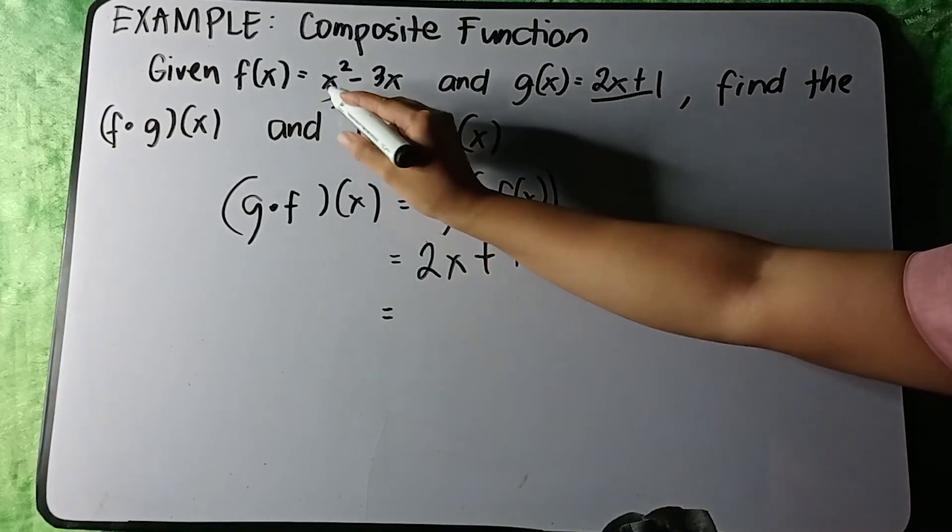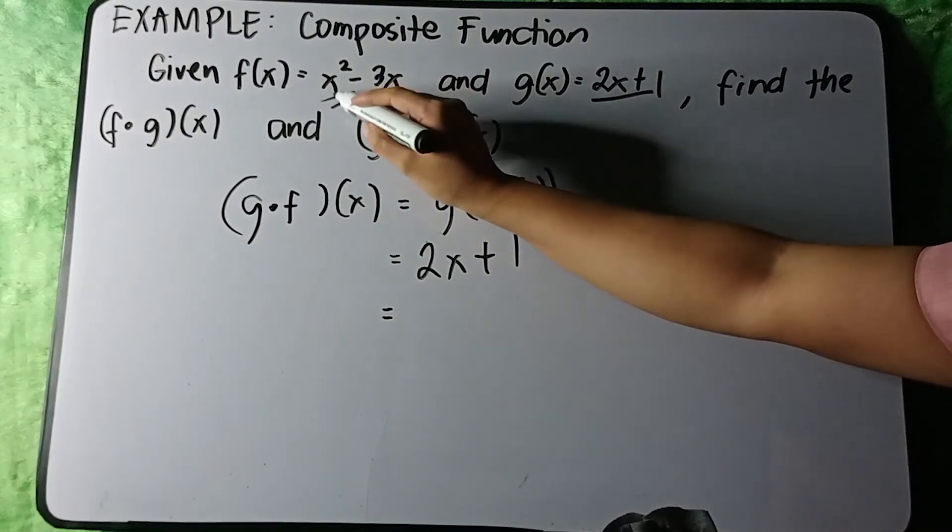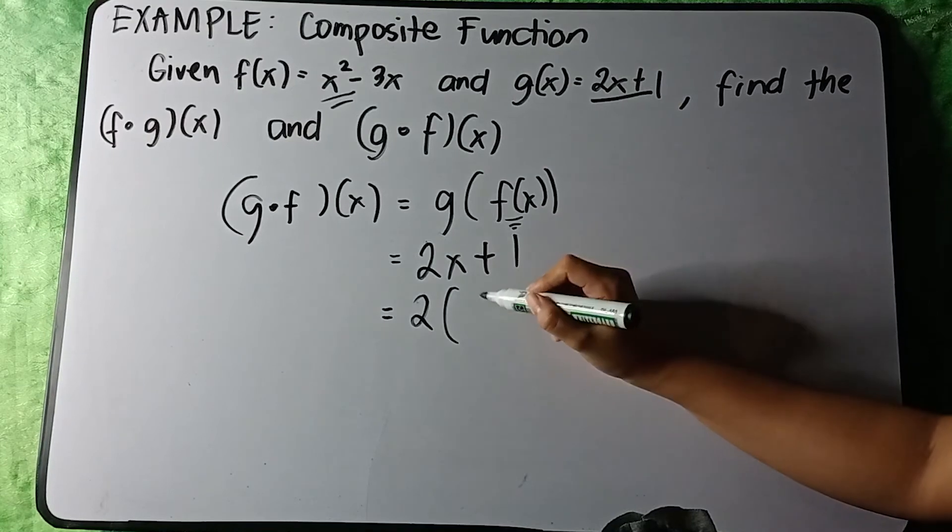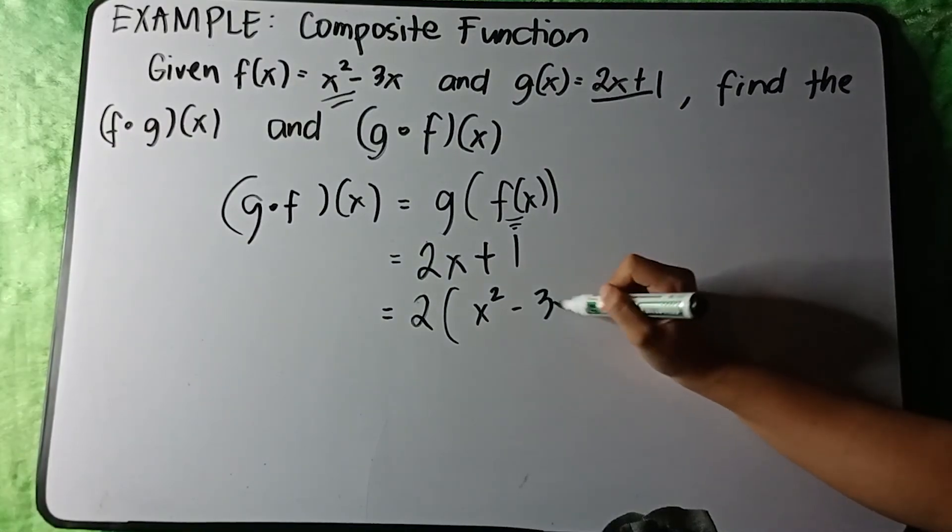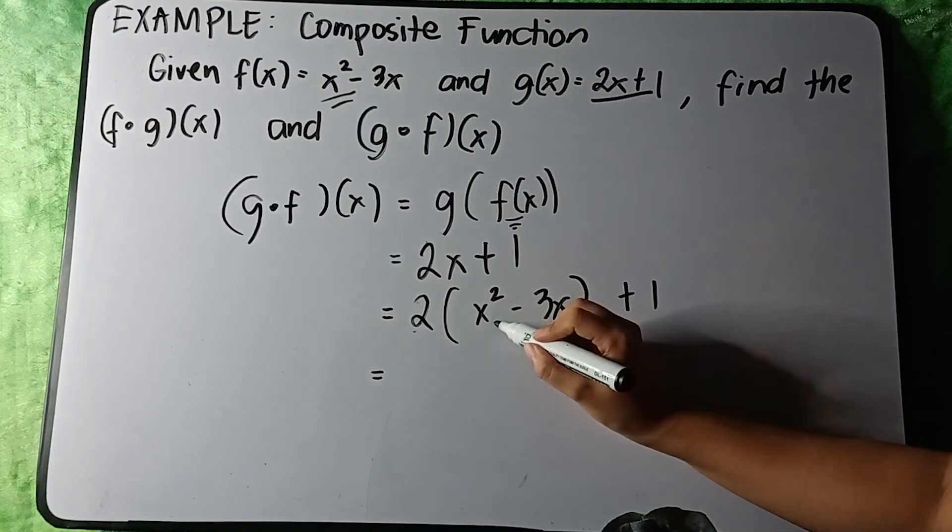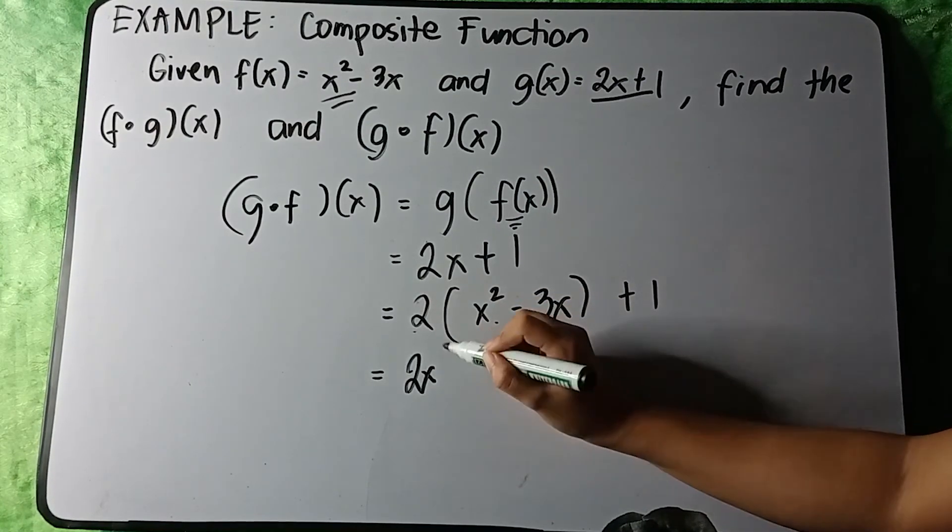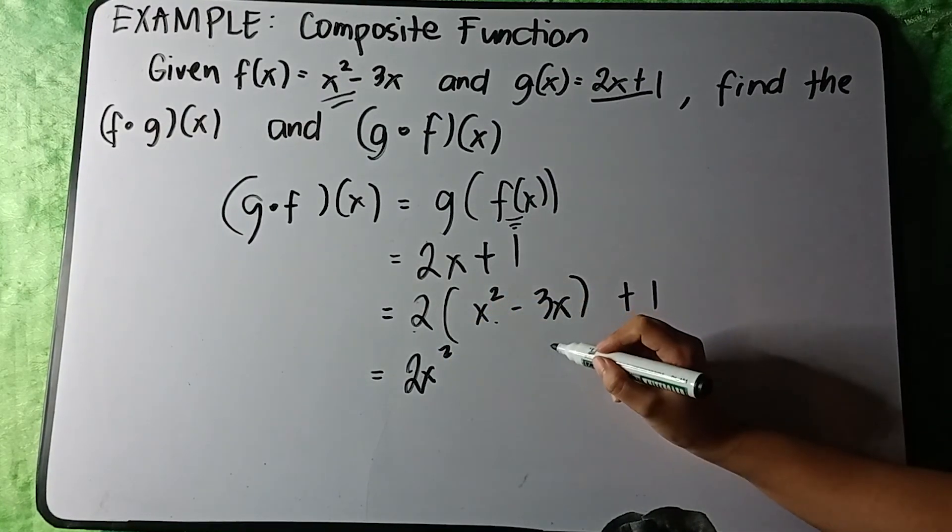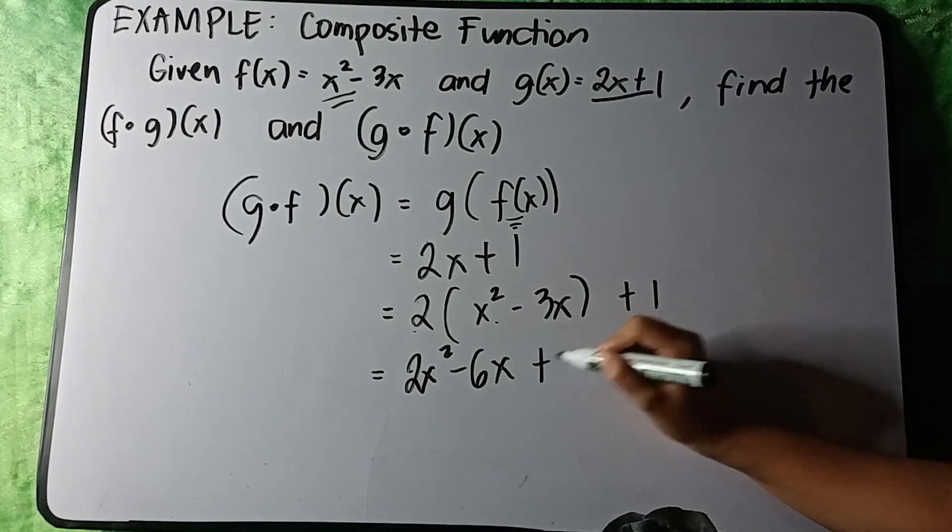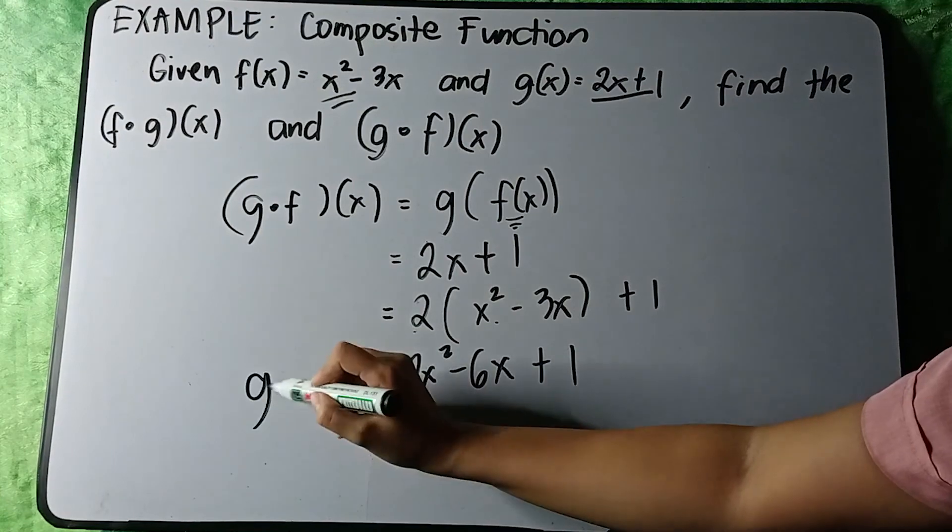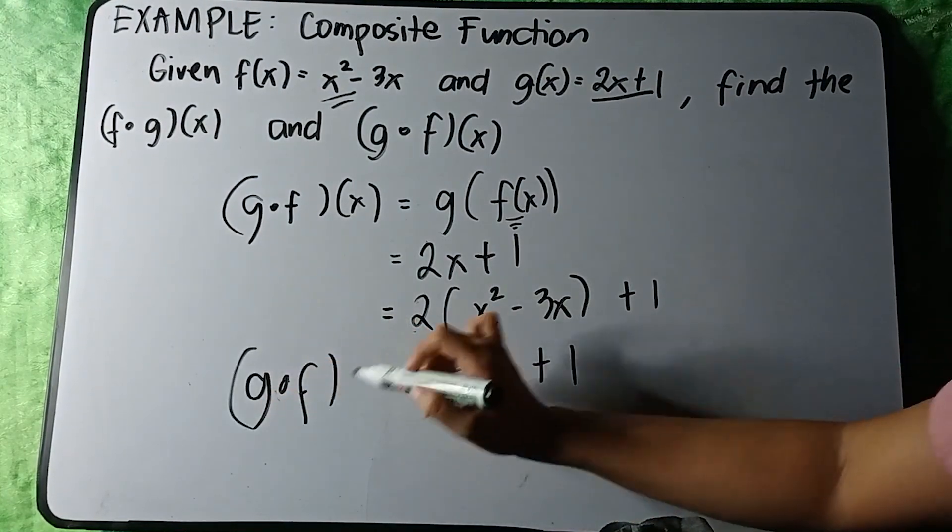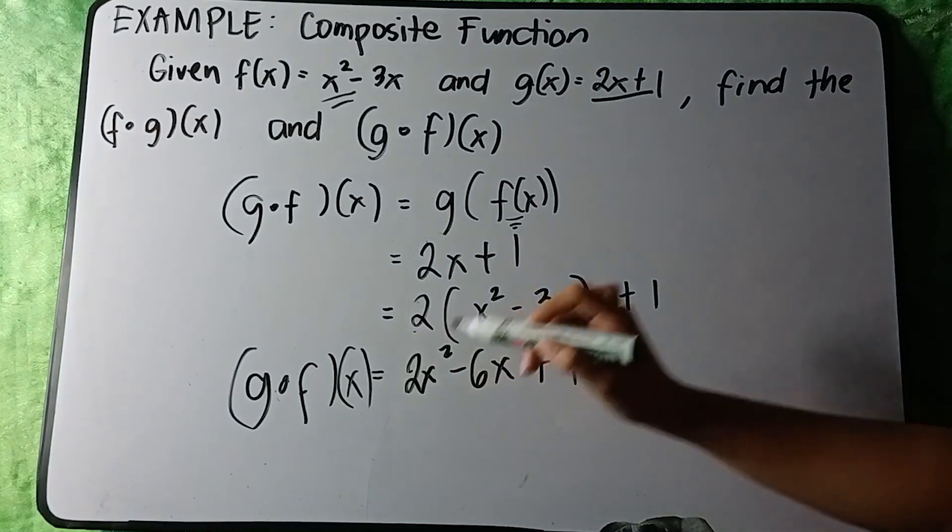So 2(x² - 3x) + 1. We have 2 times x² is 2x², and 2 times -3x is -6x, plus 1. So g(f(x)) = 2x² - 6x + 1.